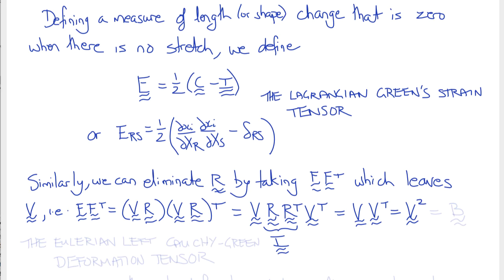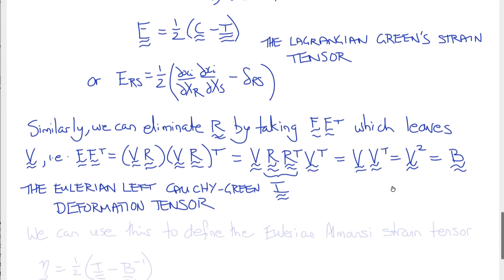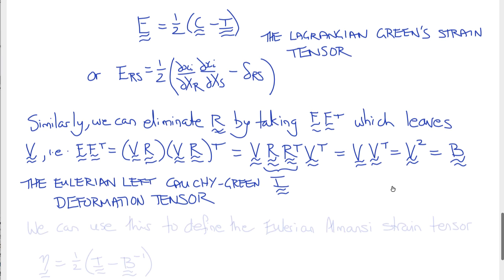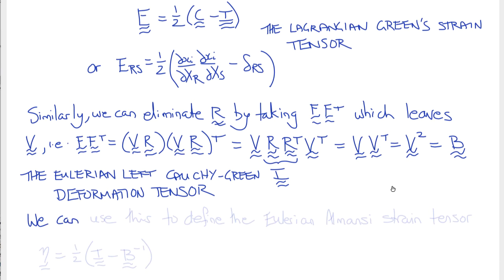This quantity is called B, the Eulerian left Cauchy-Green deformation tensor. In the same way that we use C to define a Lagrangian strain tensor, we can use B to define an Eulerian strain tensor, known as the Almanzi strain tensor, sometimes denoted by η. η is one-half of I minus B inverse.